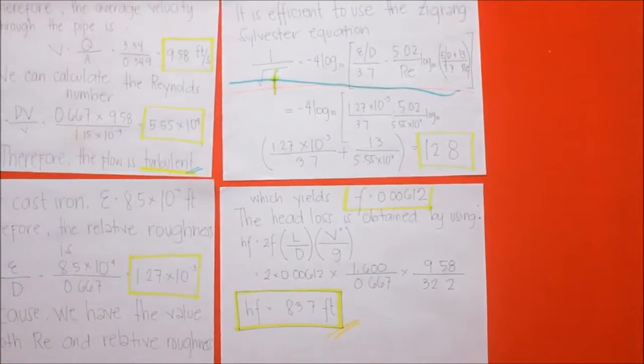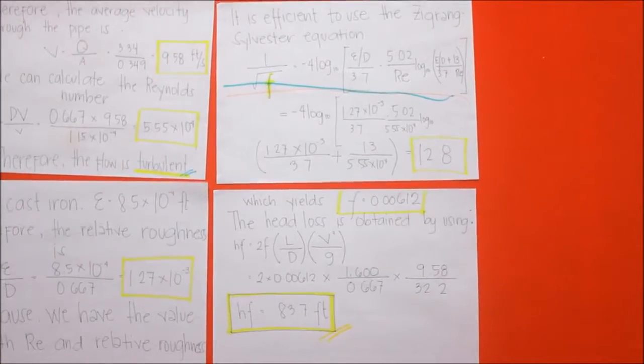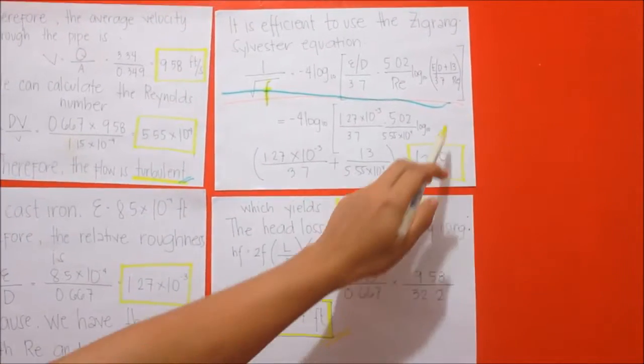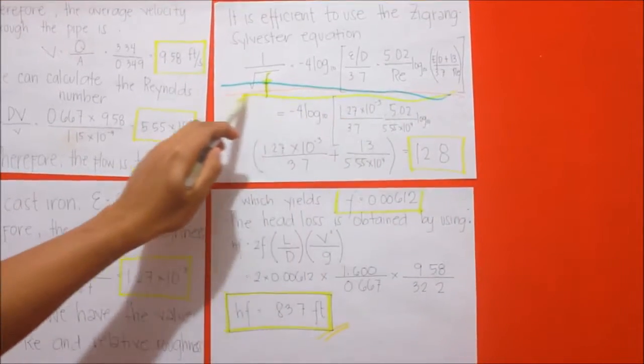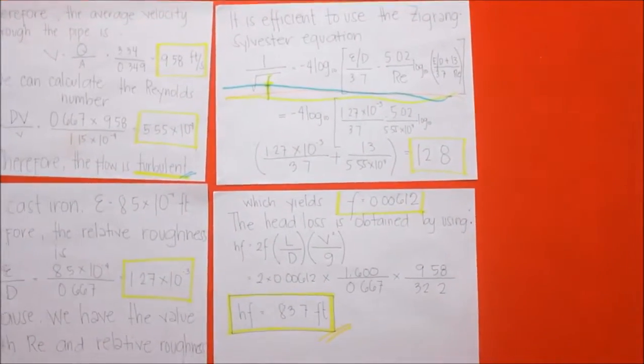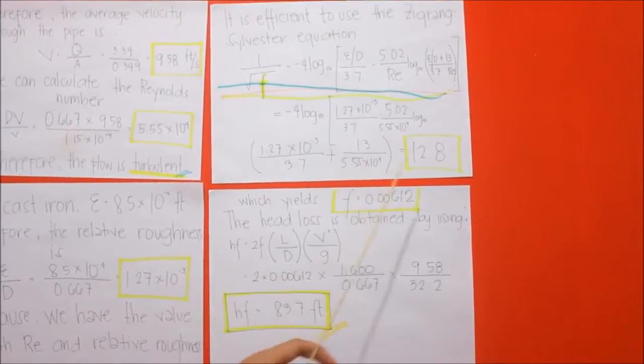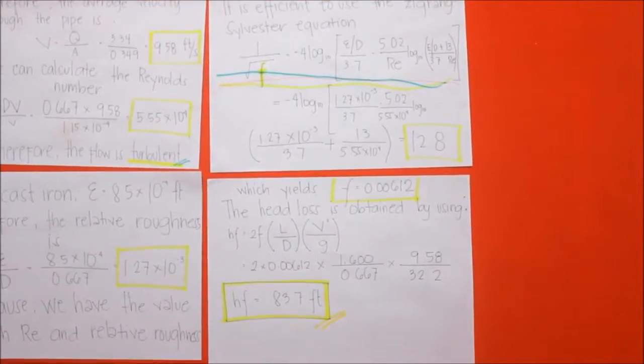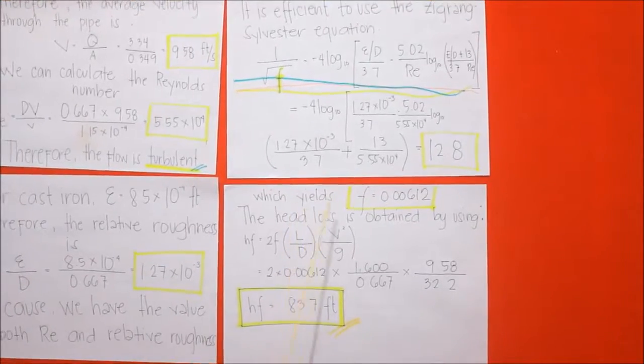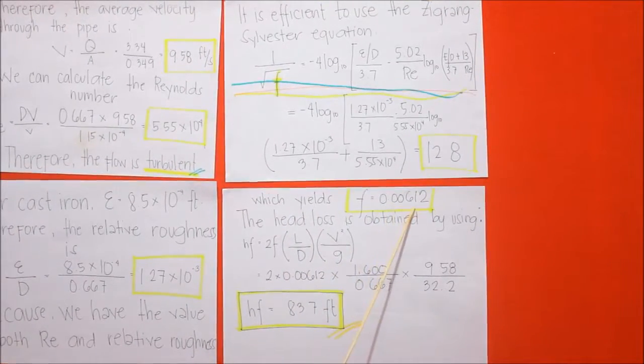It is efficient to use the Zegral-Sylvester equation. Simply plug in the given to the equation to come up with the answer of 12.8, which yields F equal to 0.00612.